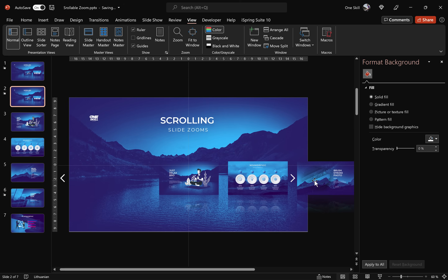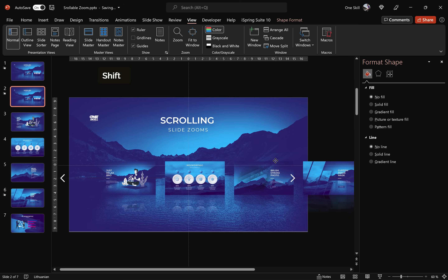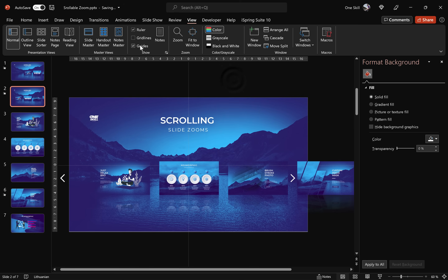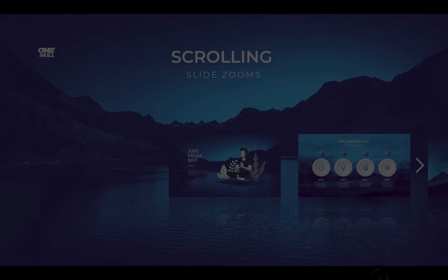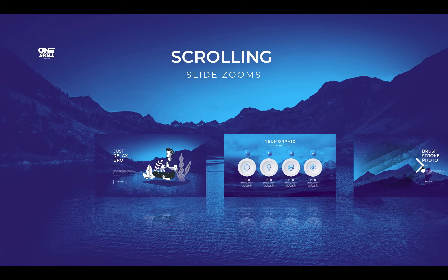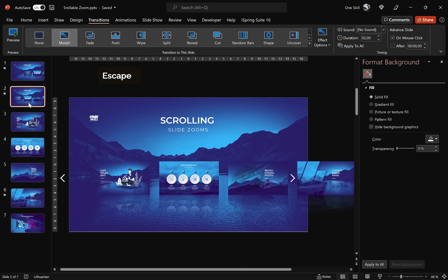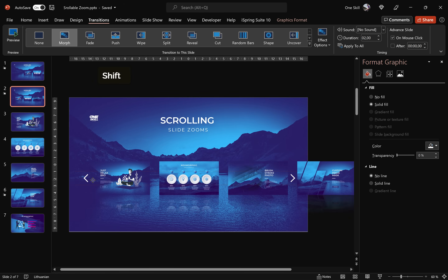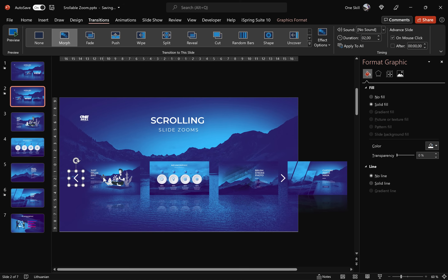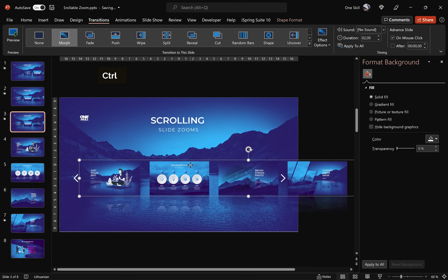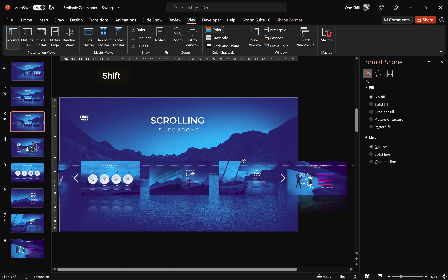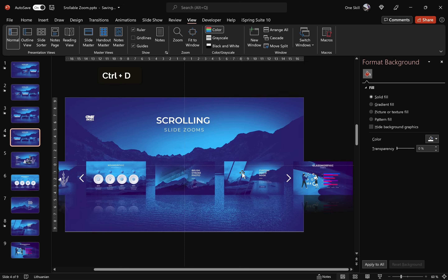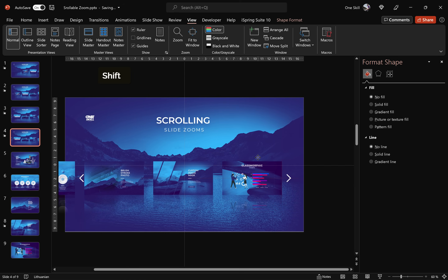Turn on the slide guides again. Grab this group of slide zooms and move it to the left so that the second slide zoom is now in the center of the slide. Make sure that Morph Transition is activated for the second slide as well. On the second slide, select the left arrow and bring it back into the slide. Now duplicate slide two and repeat the steps — move the slide zooms so that slide zoom number three is in the center. Continue duplicating slides and moving the slide zooms until all are done.